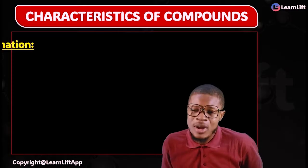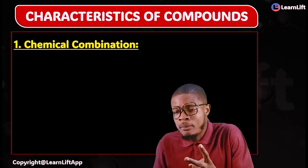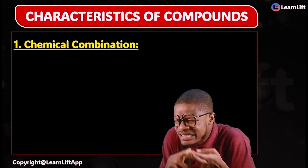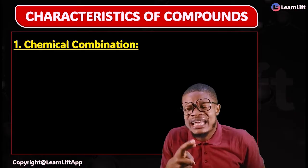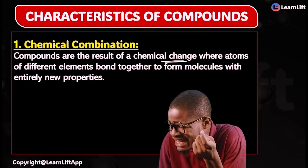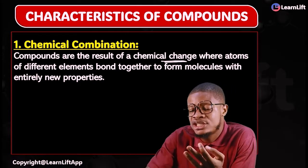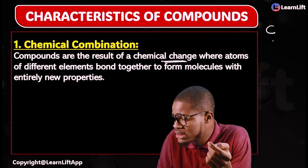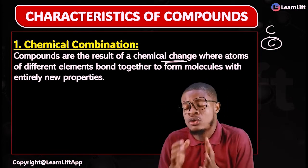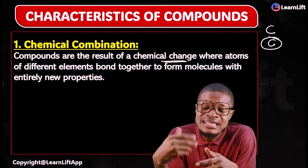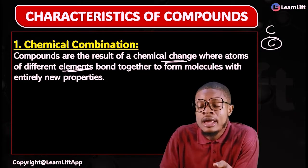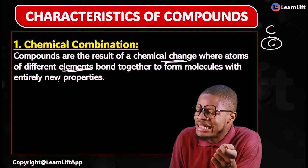There are characteristics of compounds that we need to know. Number one is called chemical combination. Compounds are substances that contain two or more elements that are chemically combined together. Compounds are the result of chemical change — not physical change, but chemical change. As a result, compounds are formed where atoms of different elements bond together to form molecules with entirely new properties.